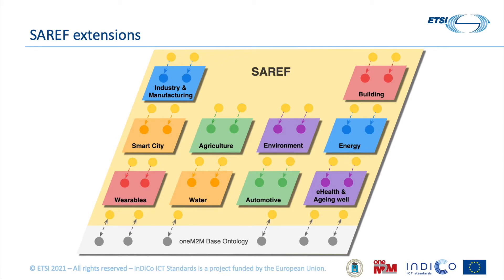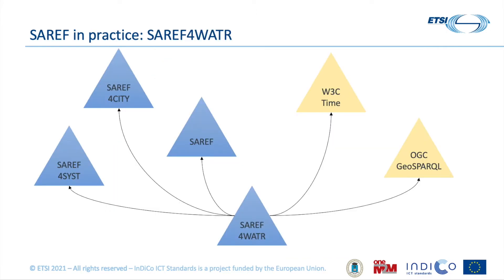Users of SAREF can choose either to use only one ontology if they are focusing on a single use case in a specific sector, or they can combine different ontologies, which is what is usually required nowadays. As an example, here we have SAREF for water. We can see the ontologies that are reused by SAREF for water — of course SAREF core ontology, but also SAREF for city, SAREF for systems, and other well-known standard ontologies such as the W3C time ontology or the OGC GeoSPARQL ontology.